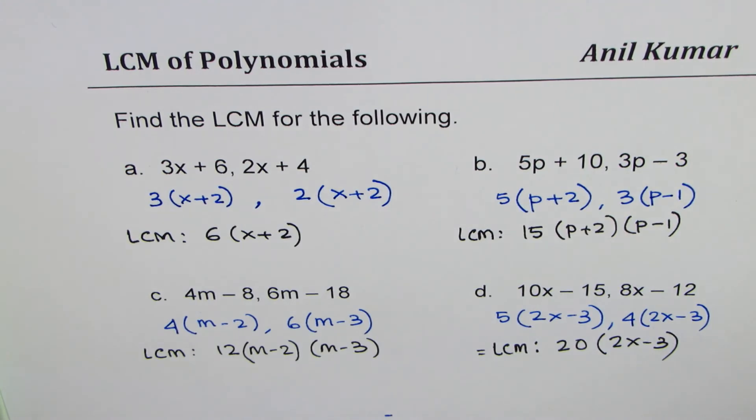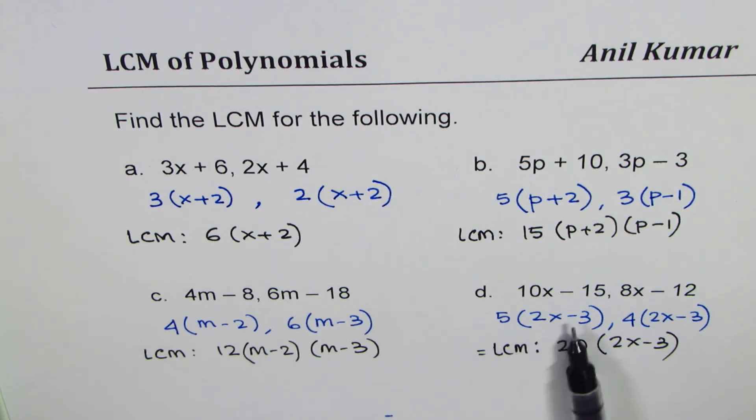When we are doing lowest common multiple of polynomials, we have to check the factors first. And then, if we have a common factor, that's well and good. Otherwise, we have to multiply by the other factor as we saw in other examples. I hope that makes sense.